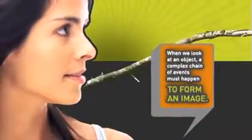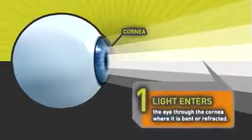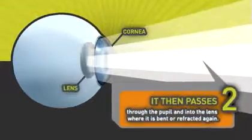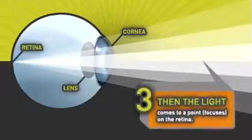When we look at an object, a complex chain of events must happen to form an image. First, light enters the eye through the cornea where it is bent or refracted. Then it passes through the pupil and into the lens where it is bent or refracted again. And then light comes to a point or focuses on the retina.